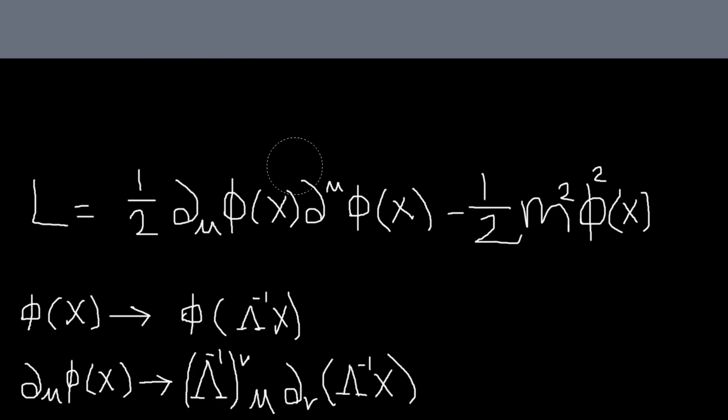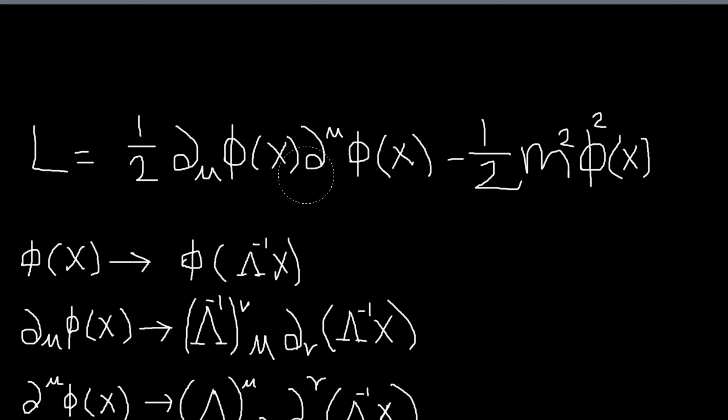So basically, just show that the Klein-Gordon Lagrangian is Lorentz invariant. Well, more specifically, it says that assuming that phi of x satisfies the Klein-Gordon equation, so if we have this,